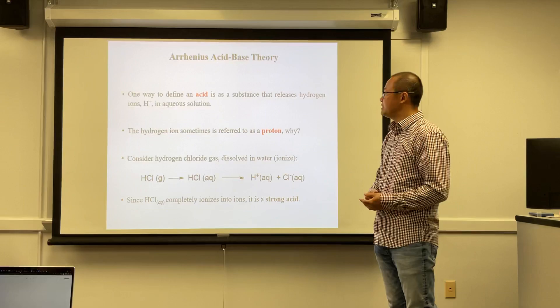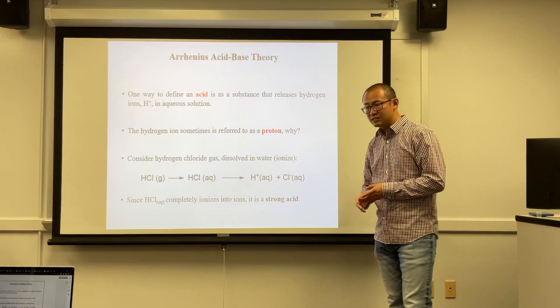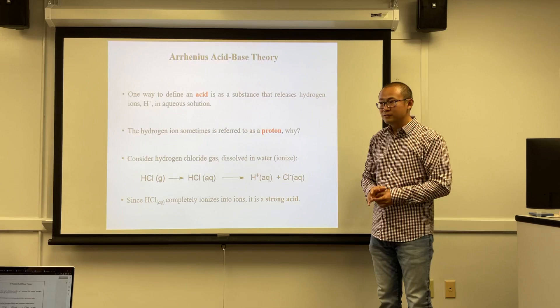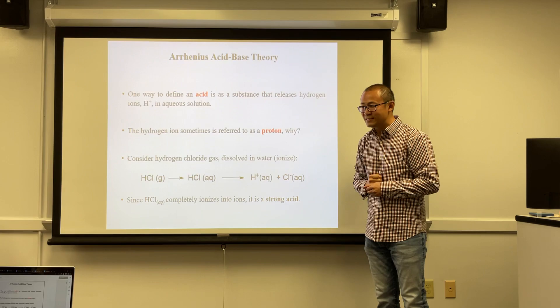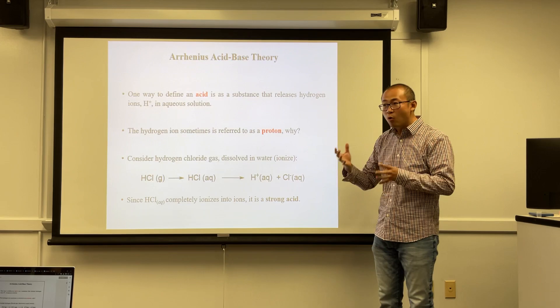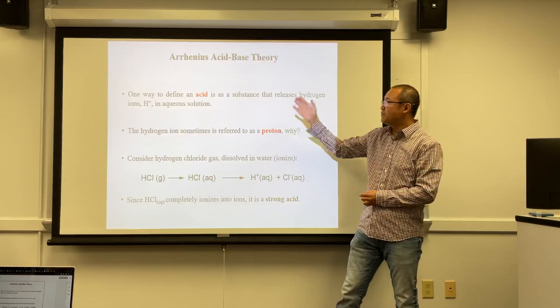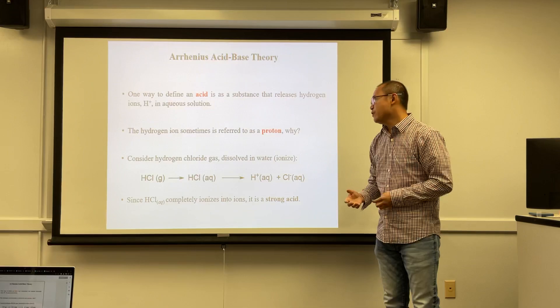In the Arrhenius theory, an acid is defined as a substance that releases hydrogen-plus ion in aqueous solution. An aqueous solution is one where water is the solvent. So if a substance dissolves in water and releases hydrogen-plus ion, that is the Arrhenius definition of an acid.